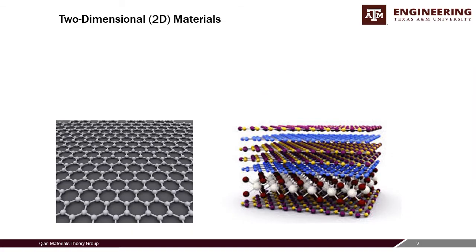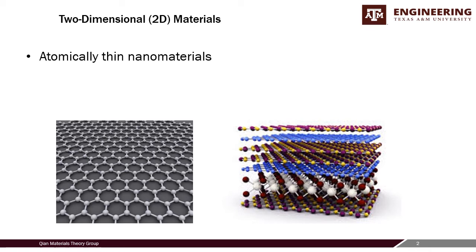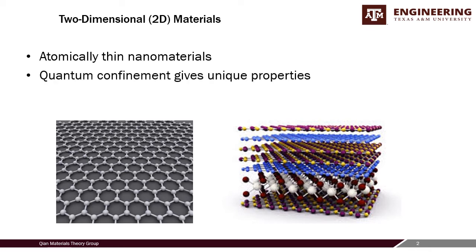Two-dimensional materials are an exciting area of research that really started with the discovery of graphene in 2004, shown in the bottom left corner, which is a single layer of graphite. These materials are atomically thin nanomaterials, just a few atoms thick, and they exhibit quantum confinement effects which give them unique properties very different from their bulk counterparts, sometimes exhibiting completely new phenomena in physics. These materials can also be stacked to form van der Waals heterostructures, as seen in the bottom right corner.